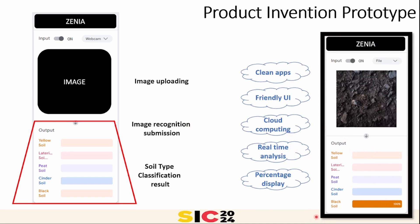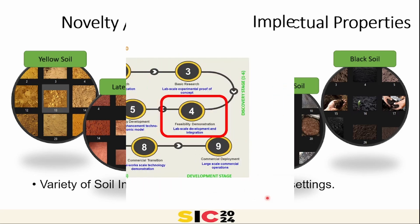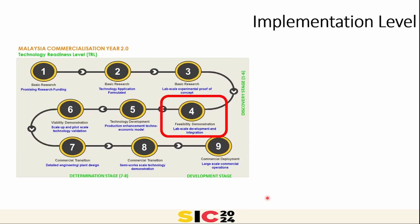Cloud computing is not happening on the cell phone or the hardware itself, but it is happening on the server and it is real-time, providing you the percentage of the classification result. Speaking about the authenticity of our product, we collected several images for five categories: yellow, light red, peat, cinder, and black soil, captured under various conditions, angles, and so on.